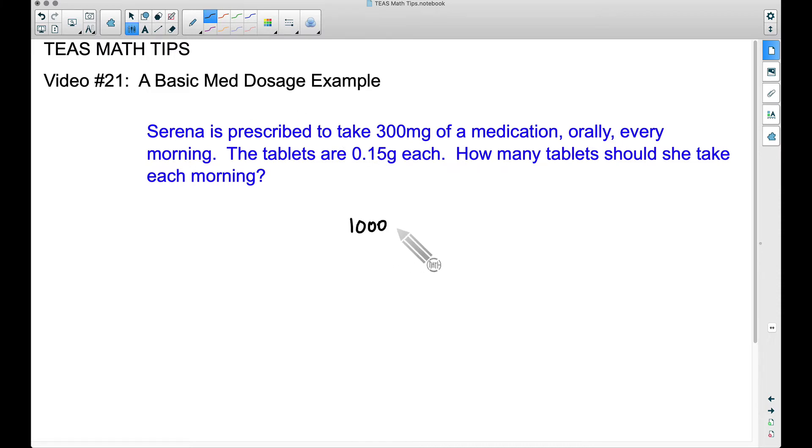1,000 milligrams is equal to 1 gram. And for now, a TEAS approach is we can use proportions. Now you may have heard of this thing called dimensional analysis. Let's just save that for when you take the med dosage course. But using this conversion here, what we know is that she has to take 300 milligrams every morning. Since I have milligrams over here on the left, I'm going to put that 300 milligram at the bottom.